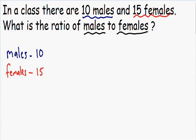That order is really important. We write the number of males first — 10 — then a colon in the middle, then the number of females second — 15. So our ratio is 10 to 15. What this means is that for every 10 males, there are 15 females.